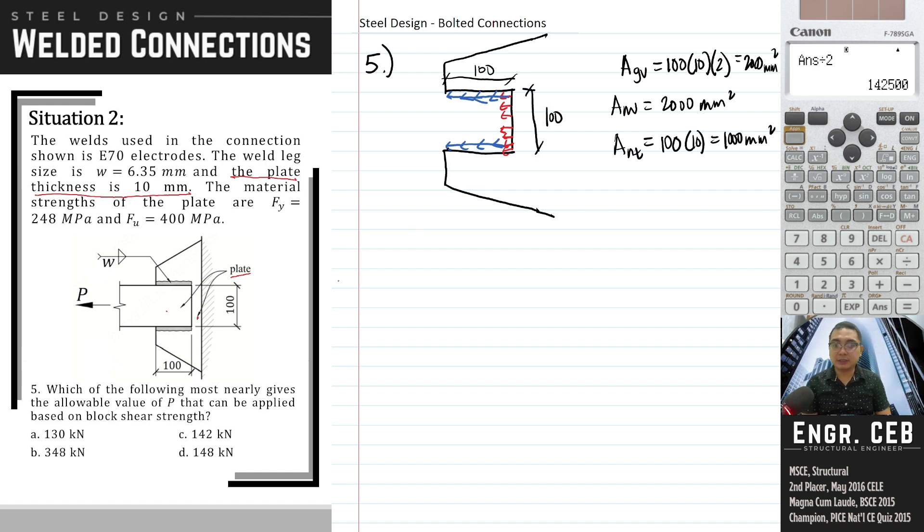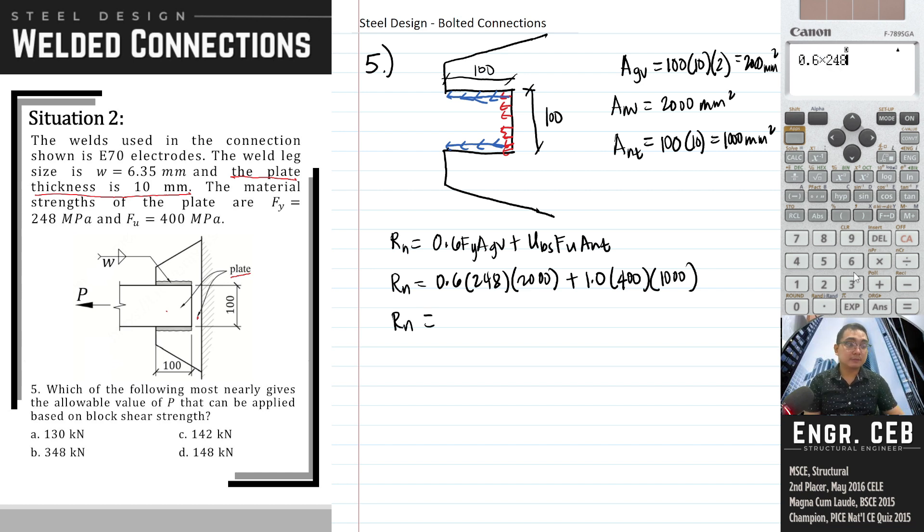So you now have the area. We can now compute the nominal strength for block shear. For block shear, what governs in the shear part is 0.6 Fy A GV when welded. So you can compute directly: 0.6 times 248 times A GV plus U sub BS is 1.0, F sub U is 400, E sub NT is 1,000. Therefore, R sub NT equals 697.6 kilonewtons.